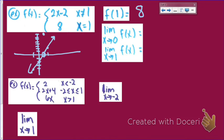The limit as x approaches 0: as my x values approach 0, I can see the y values are approaching 2. The limit as x approaches 1 is a little trickier. I'm looking for what the graph is approaching — not the actual value at x equals 1, just what it's approaching. That's the open circle, and even though it's not a closed circle, that's still what the graph approaches as it gets closer and closer. So that limit is 0.